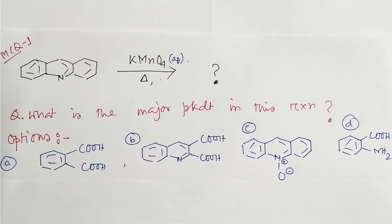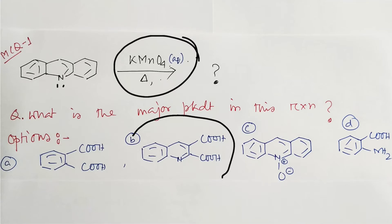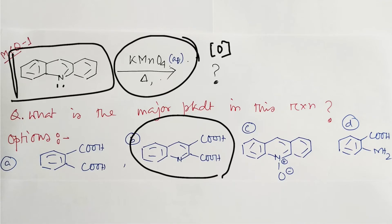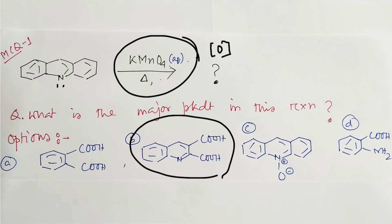Now the next MCQ: if you oxidize acridine with aqueous KMnO₄ under intense heat, what will be the product? The answer is a specific compound. KMnO₄ is an oxidizing agent, so oxidation happens on the acridine nucleus. Oxidation removes electrons from the most electron-rich position. There are two benzene rings versus one pyridine — pyridine is more electron-deficient, so pyridine oxidation is not possible.